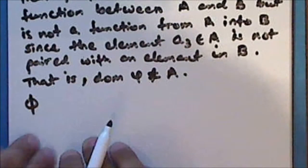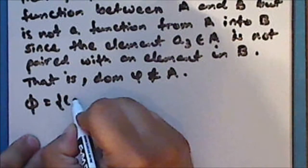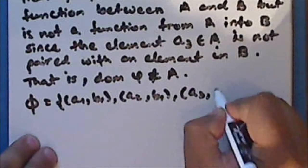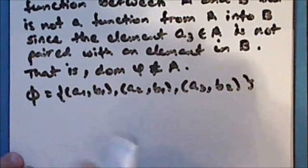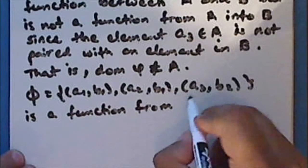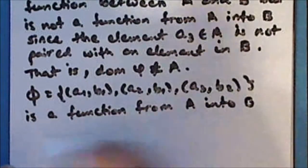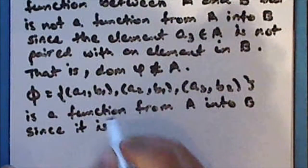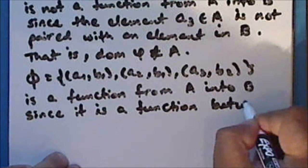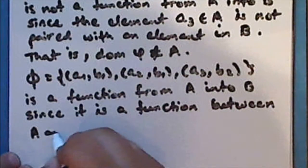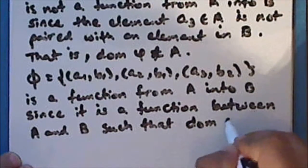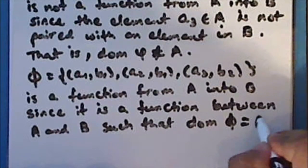Now the typeface φ, containing the ordered pairs (a₁, b₁), (a₂, b₁), and (a₃, b₂), is a function from the set A into the set B, such that the domain of typeface φ is the entire set A.